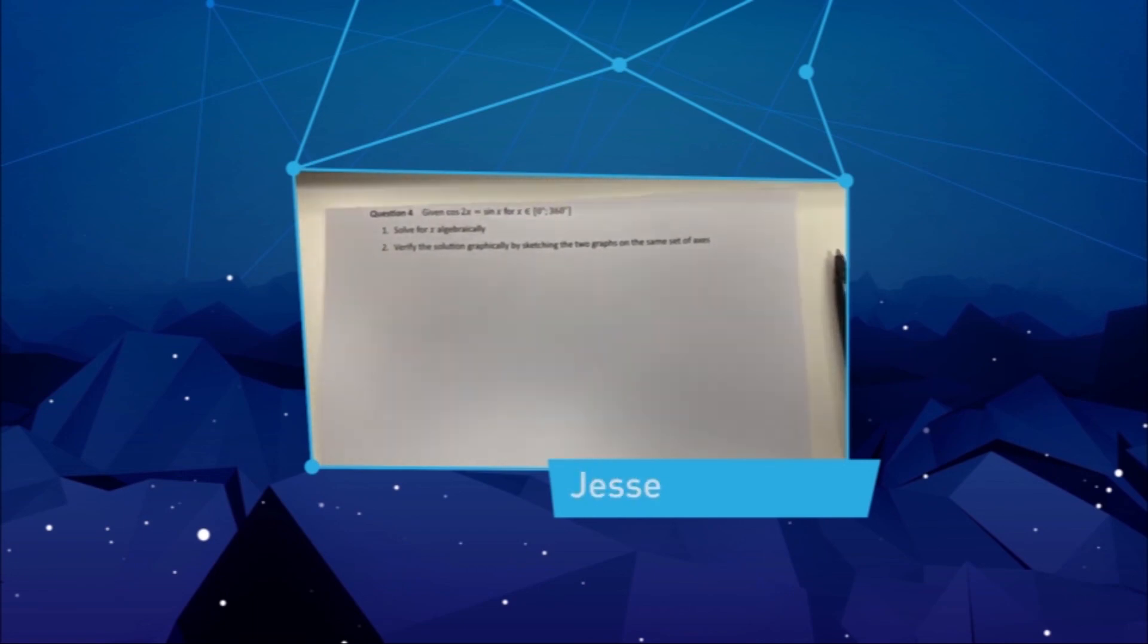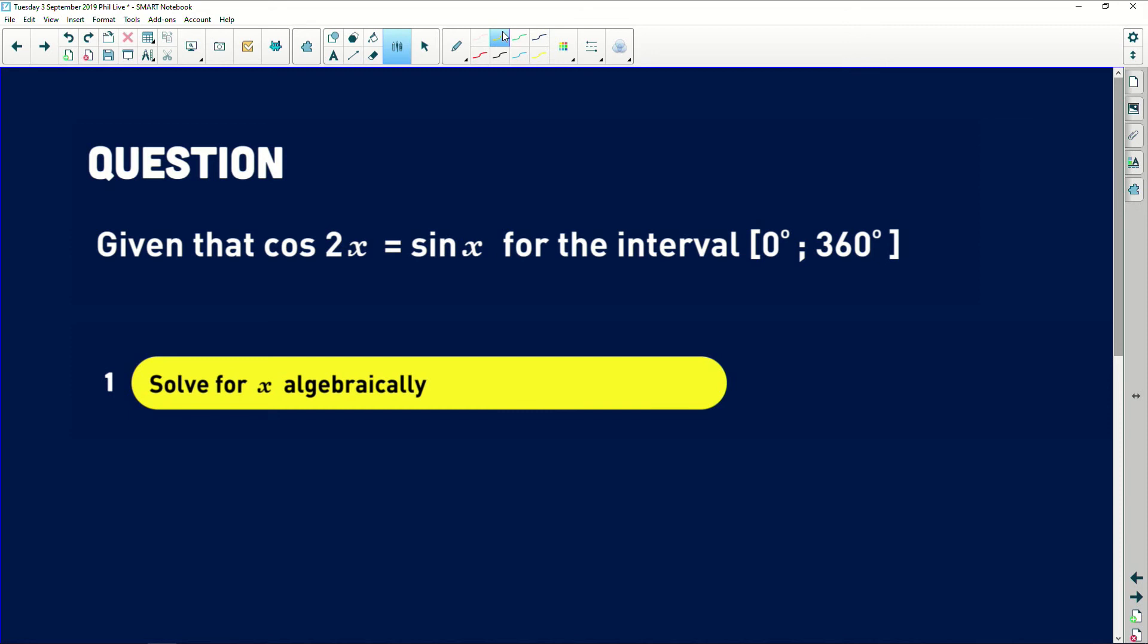Hi Tenfold, Jesse from the Western. Please help me. Thank you. It says that we're given that cos of 2x is equal to sine of x for the interval 0 to 360 degrees. Very important.